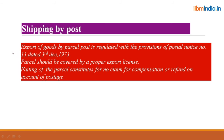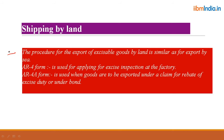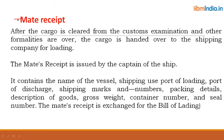Shipping by post: export of goods by parcel post is regulated by Post Notice Number 837 of 1973. Parcels should be covered by a proper export license; otherwise, you will not be able to send the parcel. Shipping by land: the procedure for export of excisable goods by land is similar to that for export by sea or air. The AR form is used for applying for excise inspection at the factory and is used when goods are exported under a claim for rebate of excise duty or under bond.